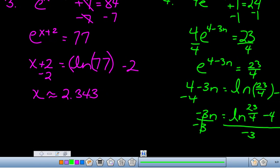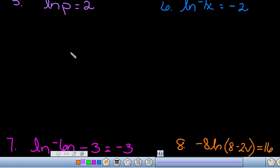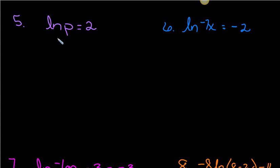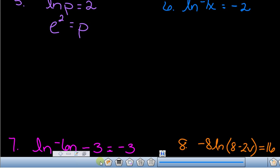Question five goes in reverse: we're given the logarithm and we have to convert back to the number. We're solving for P. The logarithmic part is already isolated, so we convert: the base of a natural log is e, and the log is the exponent, so 2 is the exponent — e to the 2 equals P. You can put that into your calculator, but we'll leave it as e squared.